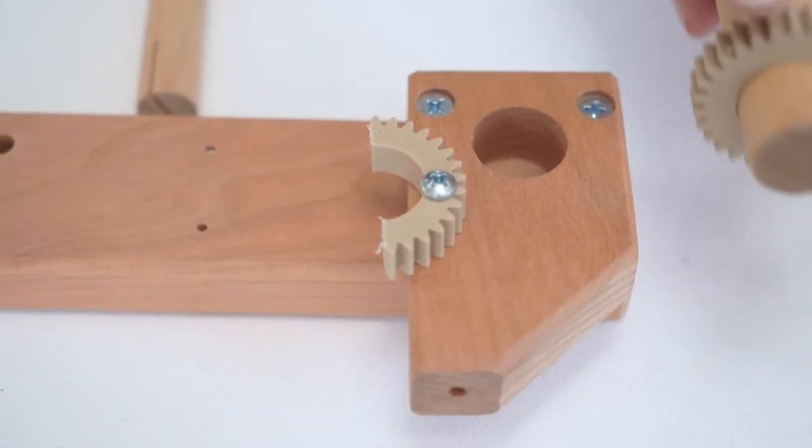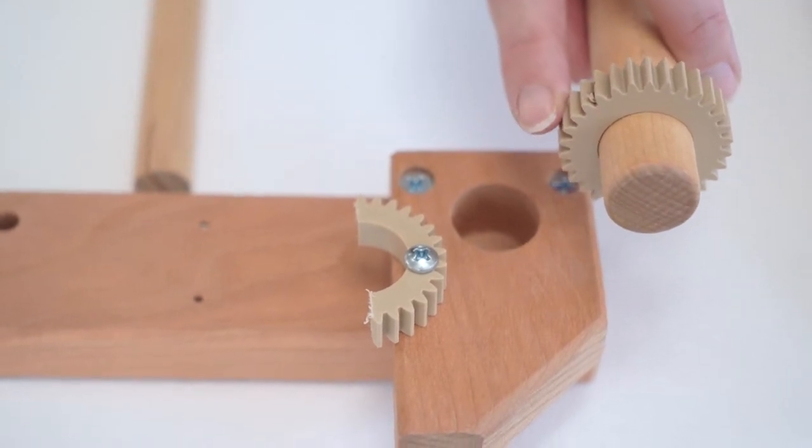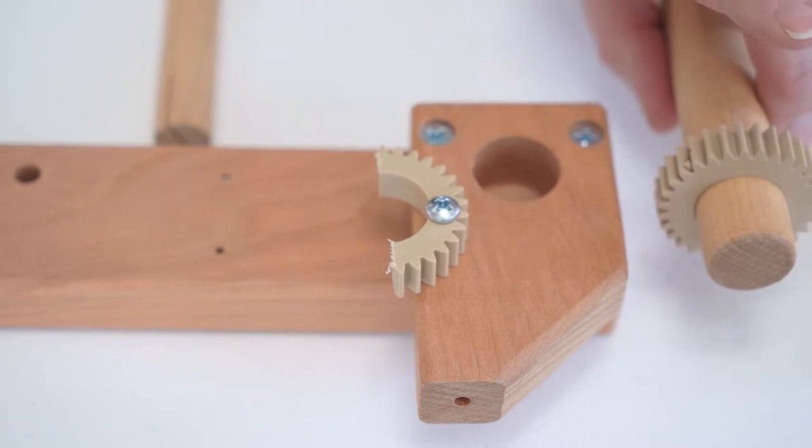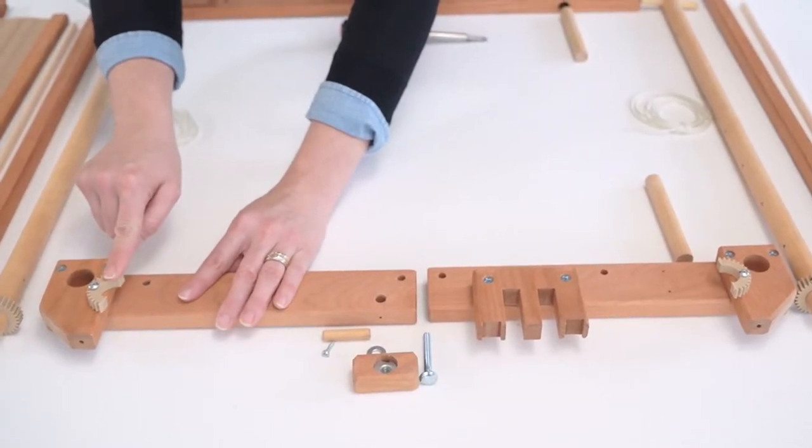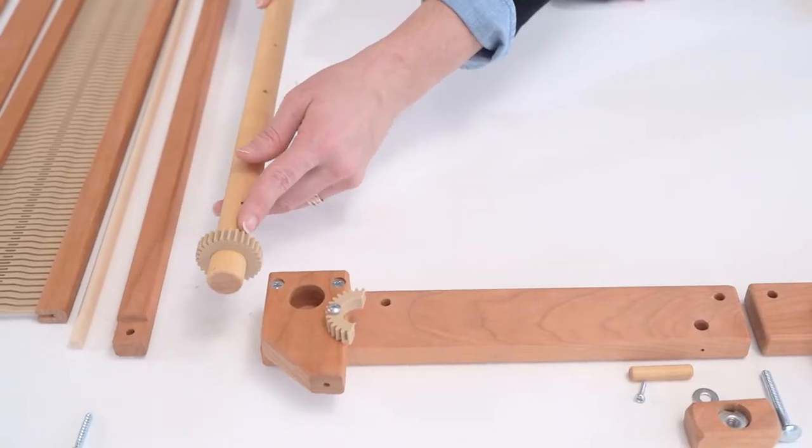And then you'll attach the other one to the back of the beam on the same side because this will be the side that the gear is on the warping beam. So the front side of the beam just has the one piece where you attach the half moon piece and this corresponds with the front.